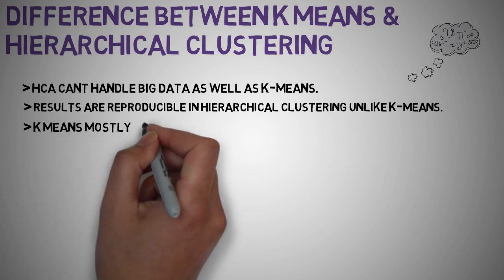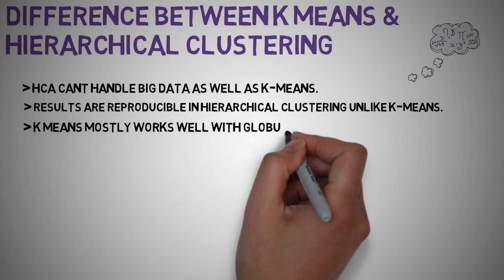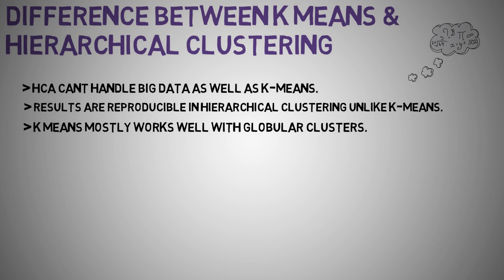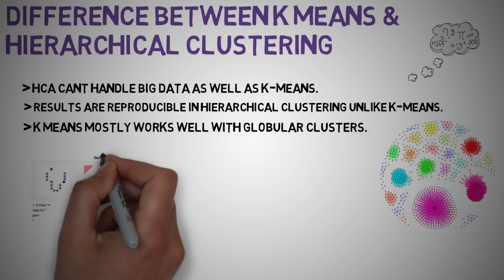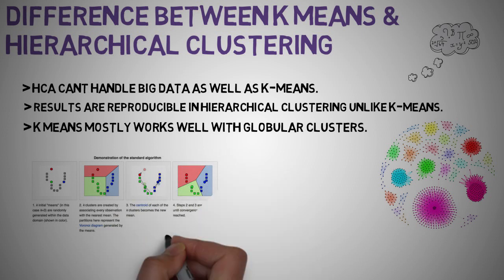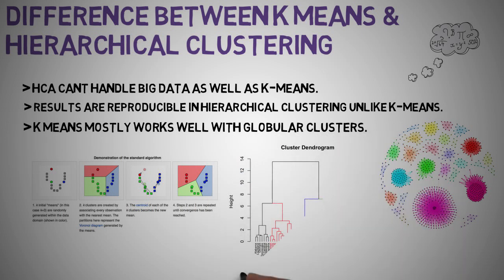K-means is found to work well when the shape of the clusters is hyperspherical, like circle in 2D or sphere in 3D. K-means clustering requires prior knowledge of k, i.e. the number of clusters you want to divide your data into. However, with HCA, you can stop at whatever number of clusters you find appropriate in the hierarchical clustering by interpreting the dendogram.